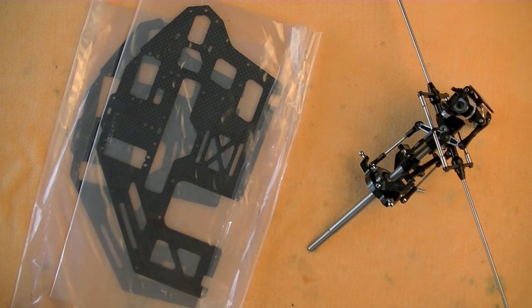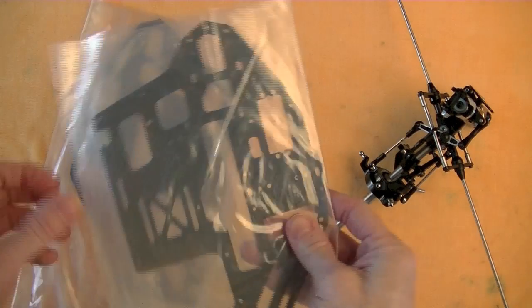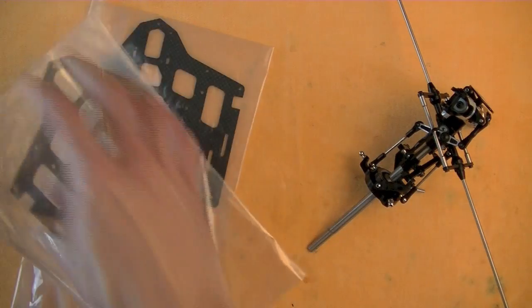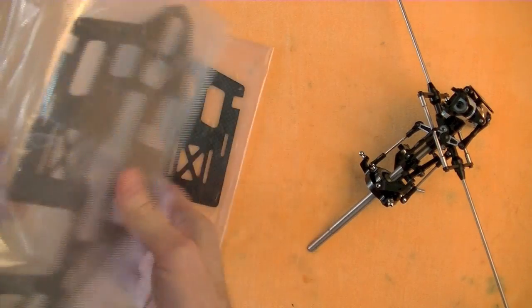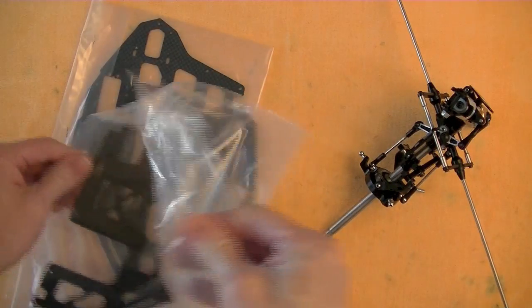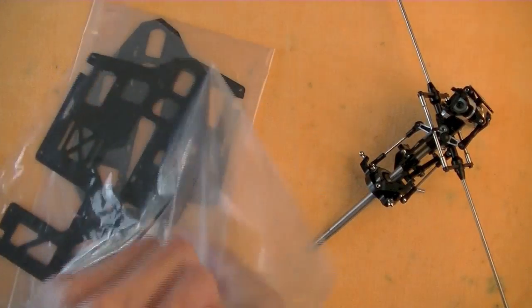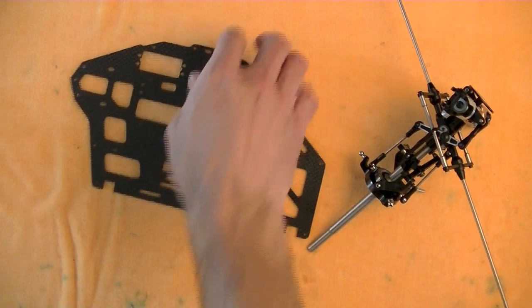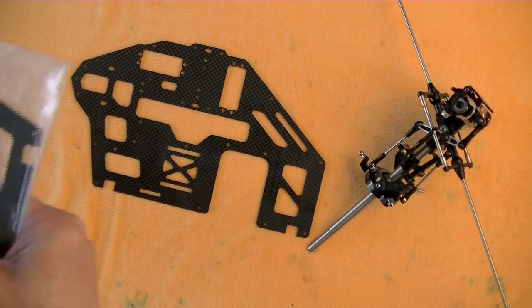Alright, so now that I've got the head assembly put together, the next thing I want to start working on is building the frame assembly. I have the two frame sides here. Before I start that assembly, I'm going to go ahead and take care of the battery tray drop mod that seems to be very popular with this particular style of frame.